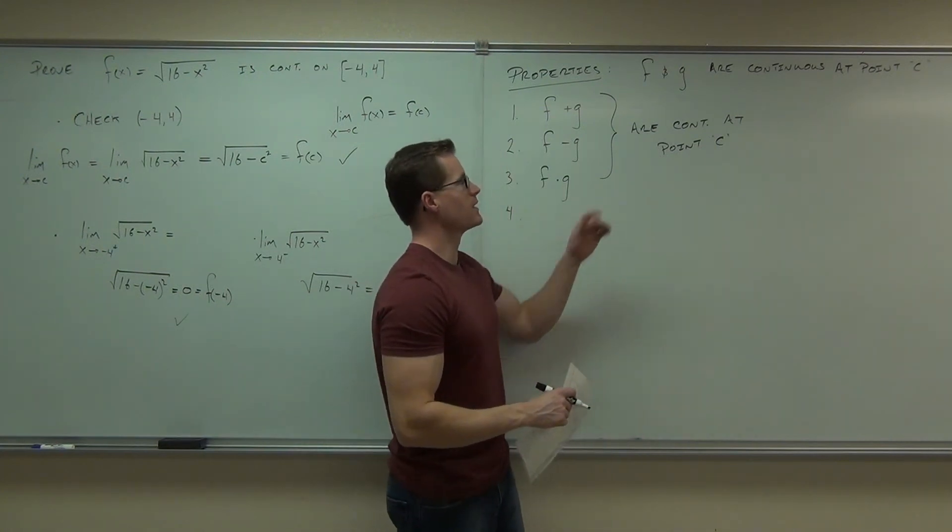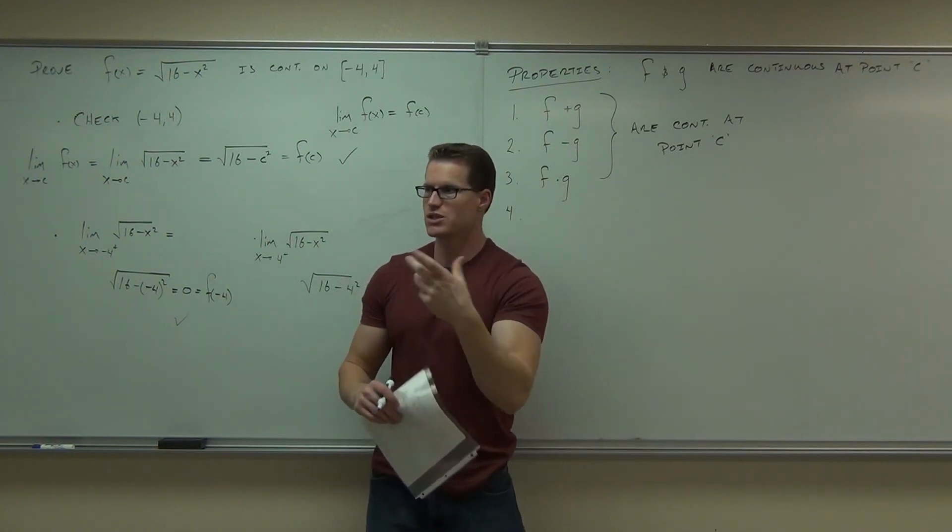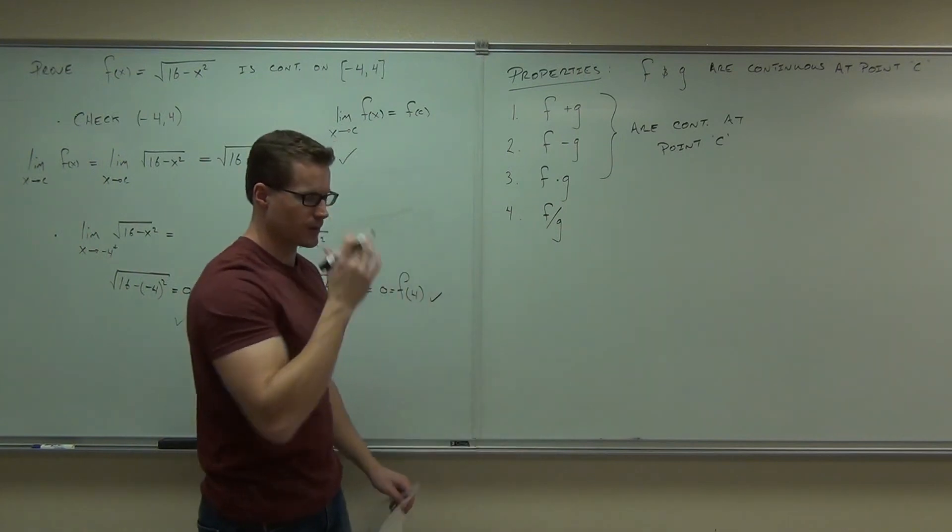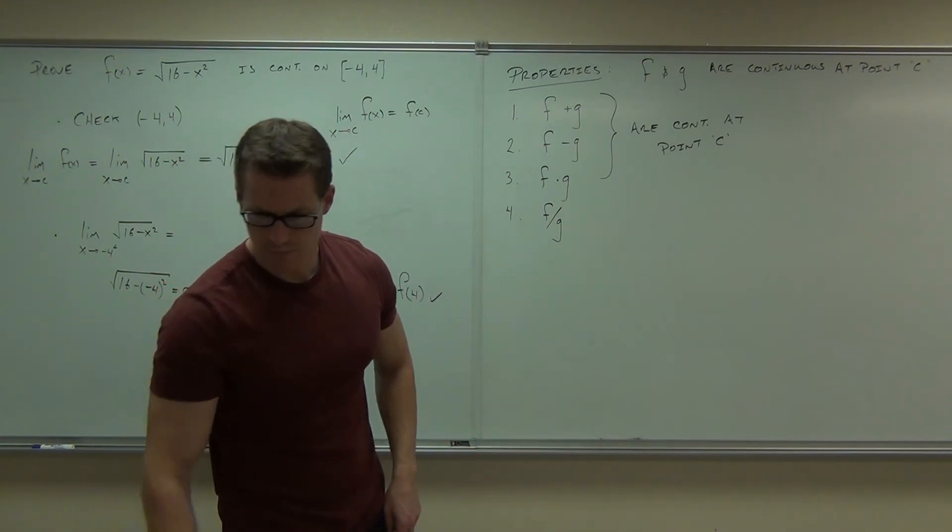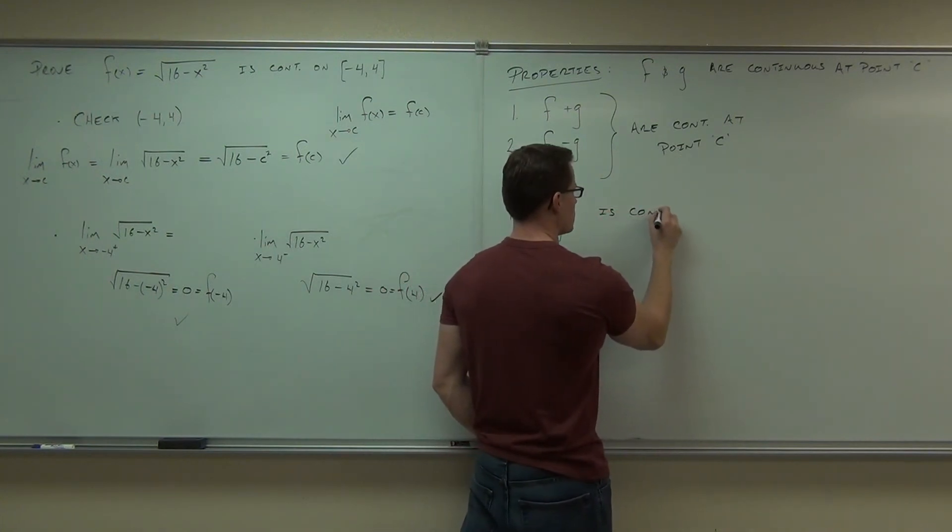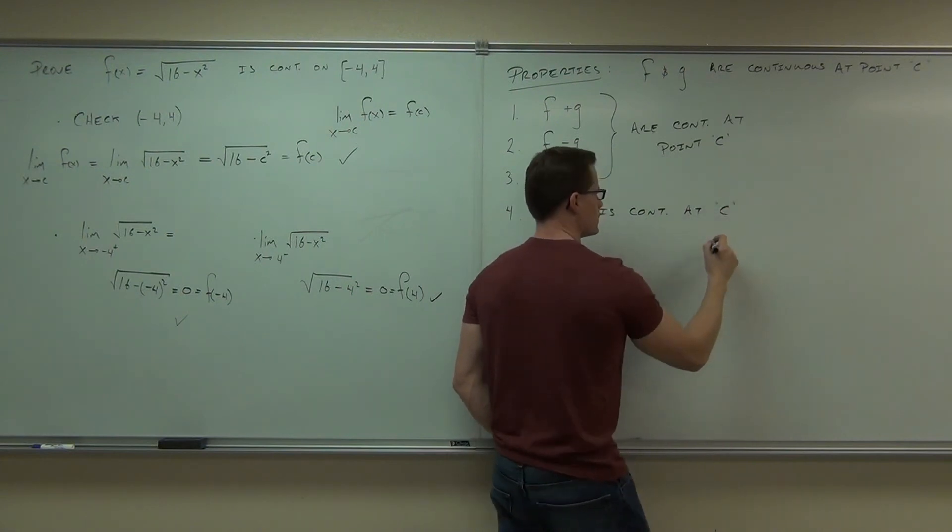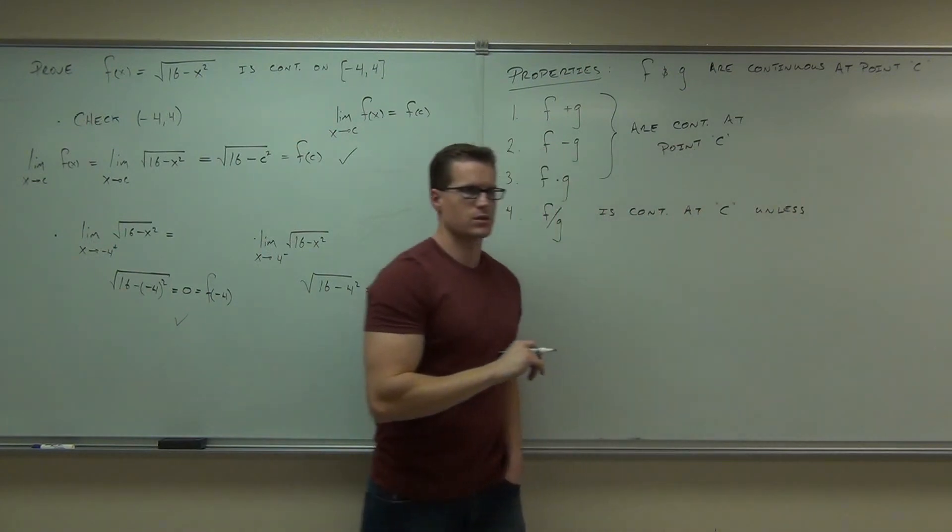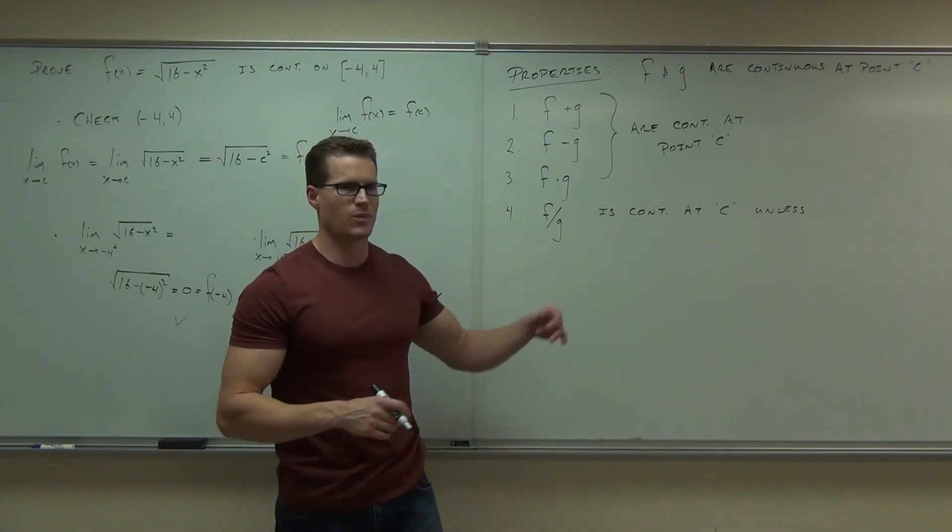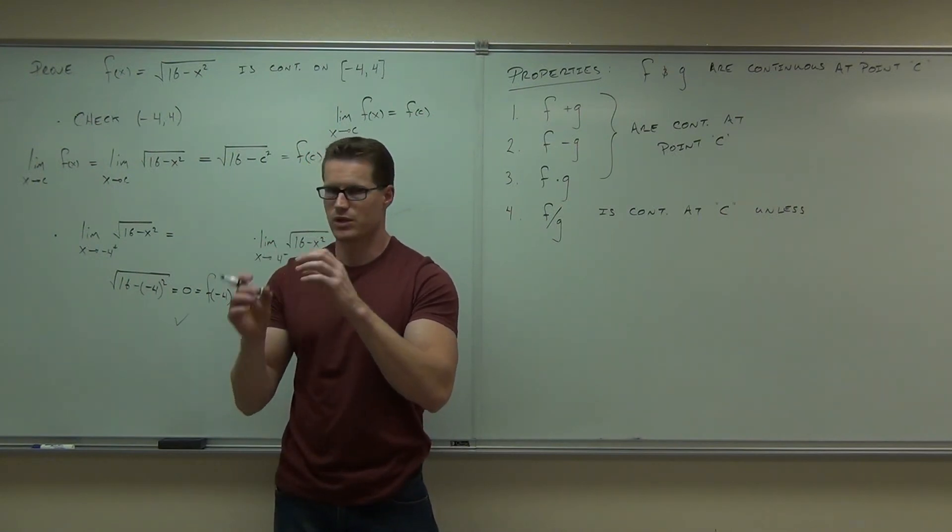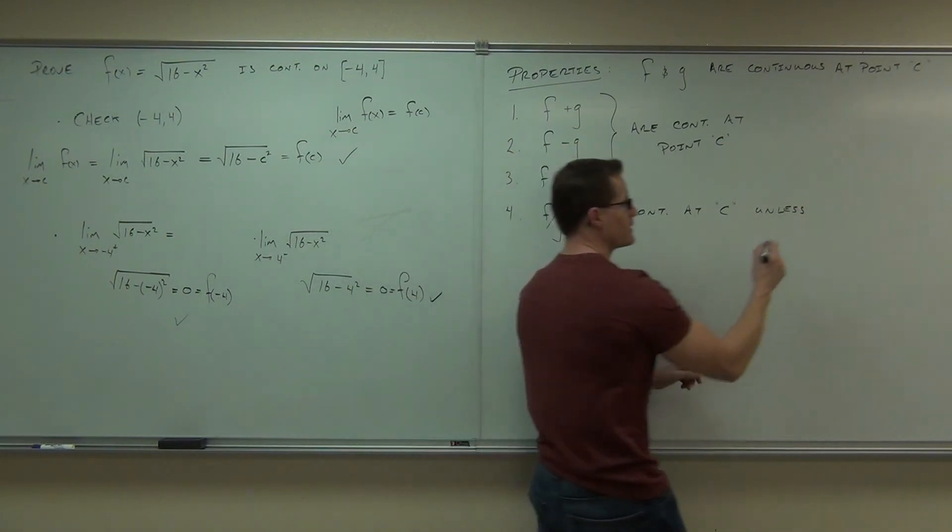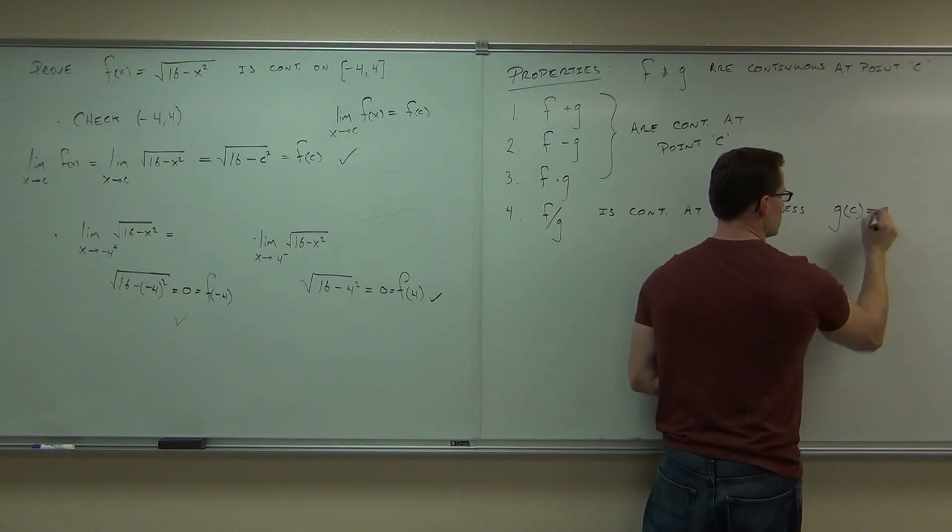Where it wouldn't be the case is, let's say that f was continuous, but g wasn't continuous at a certain point. If you add them, well, then g is still not continuous there, no matter what you do. So that wouldn't work. The other one is f over g. Now I'll say this, f over g is continuous at c. Unless what happens? Unless g of c equals zero. If g of c, when you take a limit of g as you're approaching c, if that goes to zero, well, then you're dividing by zero, and you can't have that.